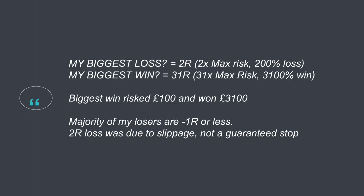My biggest win is 31 R — 31 times my maximum risk, or a return of 3,100% on that one trade. For every £100 risked, I won £3,100 back. That gives you an indication of the sort of big trends we're looking for. A lot of people come into trading and risk 5-6% per trade. If you're risking 10% per trade, you've only got 10 trades before you wipe out your entire account. If you go on a 10-trade losing run, you're out of the game. If you go on a 5-trade losing run, you've lost 50% of your account.